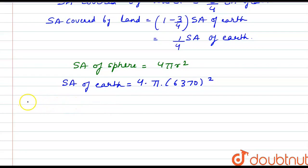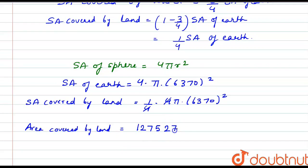So the surface area covered by land will be 1/4 × 4π × (6370)². The 4s cancel out. We get the area covered by land equal to 127,527,400 square kilometers.